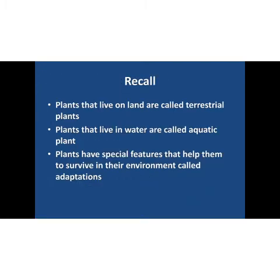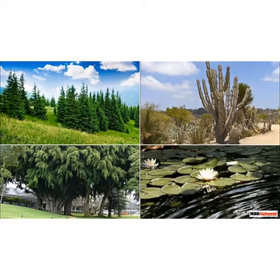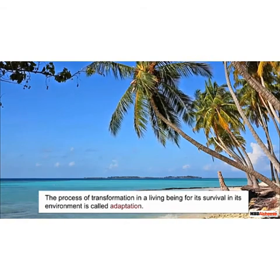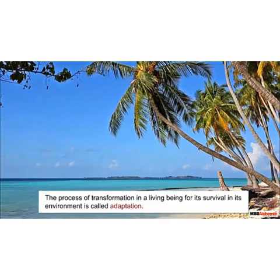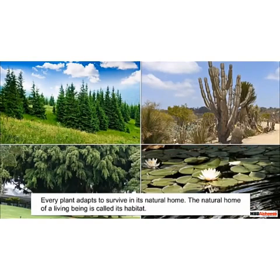Now let's watch a video and recall what we have studied in this chapter. Plants found at different places survive in different climates and soils. They transform themselves to survive in their unique surroundings. This process of transformation in a living being for its survival in its environment is called adaptation. Every plant adapts to survive in its natural home. The natural home of a living being is called its habitat.